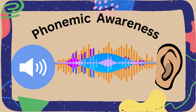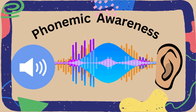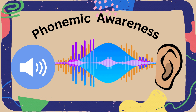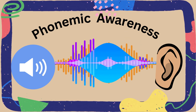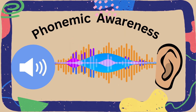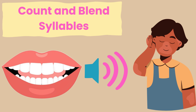Phonemic awareness. We will use I Say, You Say, We Say practice for each part for Wonder's Kindergarten, Unit 5, Week 2. Count and blend syllables. I will say two syllables. You will say the syllables back to me. Then we will say the two syllables together. Then we will say the word and how many syllables it has.